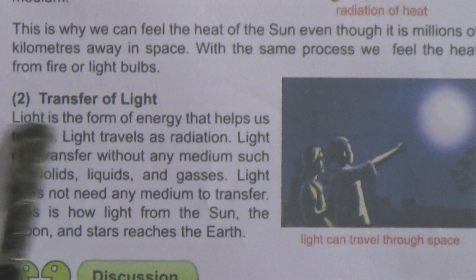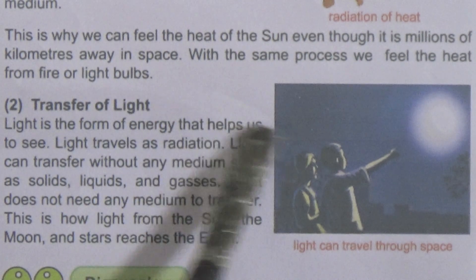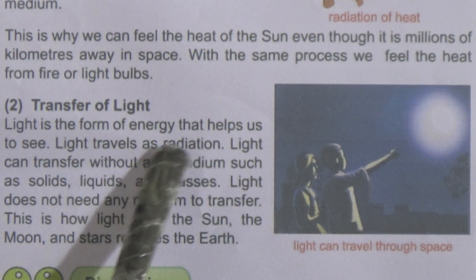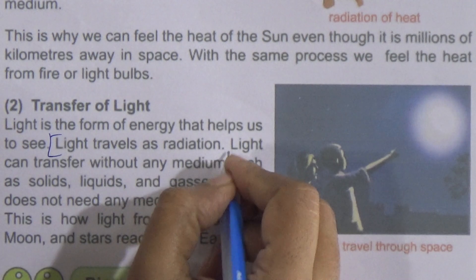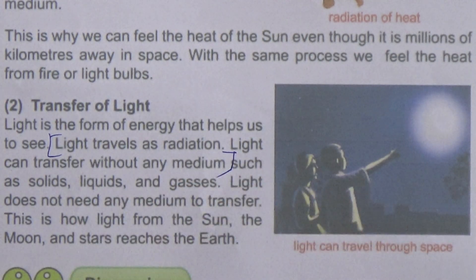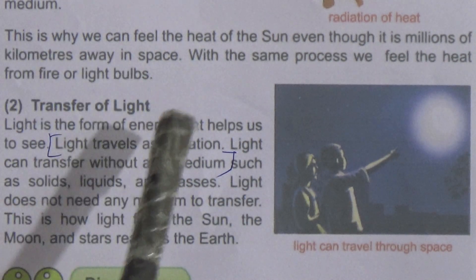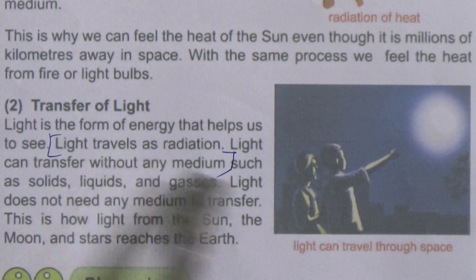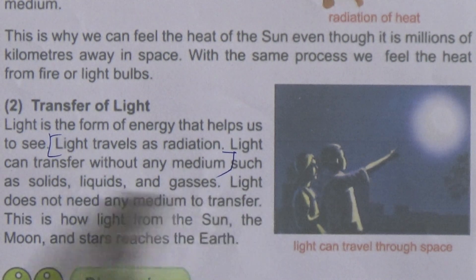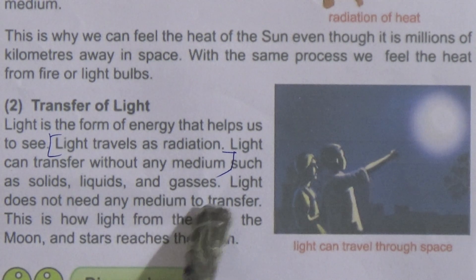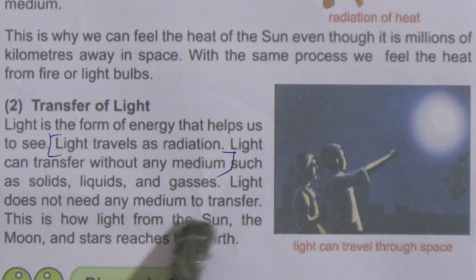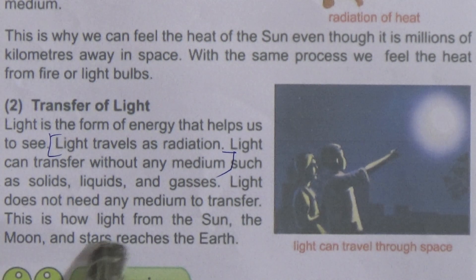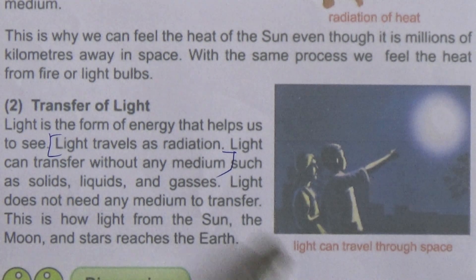Now come to transfer of light. Light is the form of energy that helps us to see. Light travels by radiation and can transfer without any medium. Dear students, this is the answer to how light transfers from one place to another — light does not need any medium such as solids, liquids, or gases to transfer. This is how light from the sun, the moon, and the stars reaches the earth.